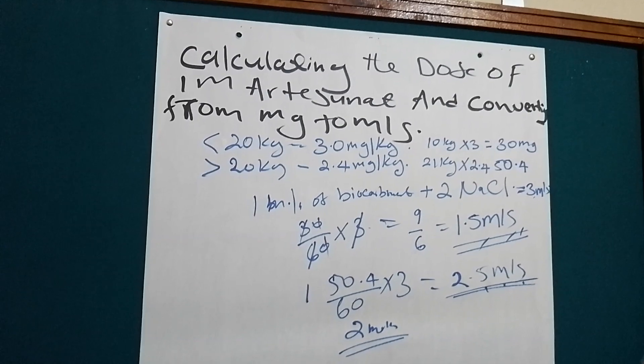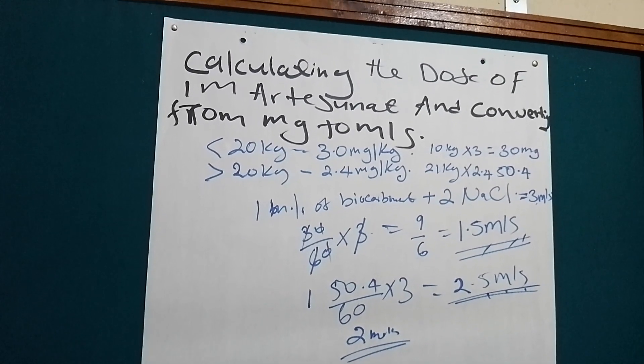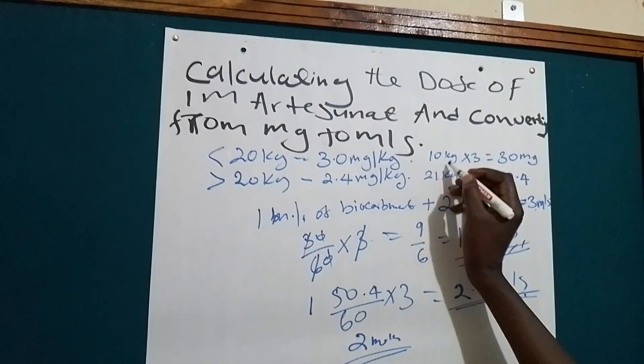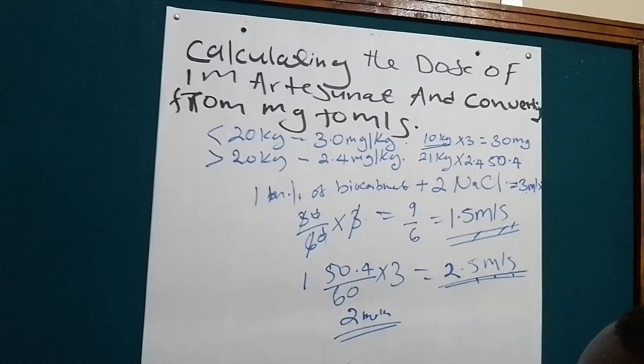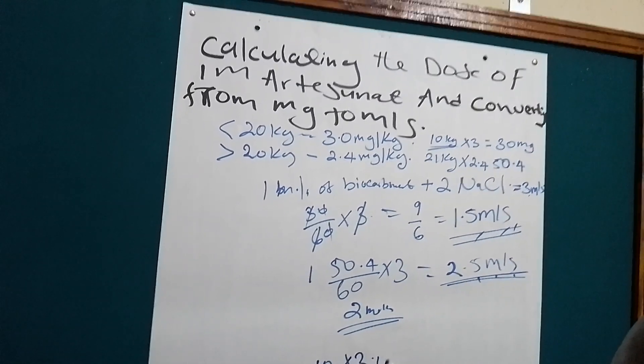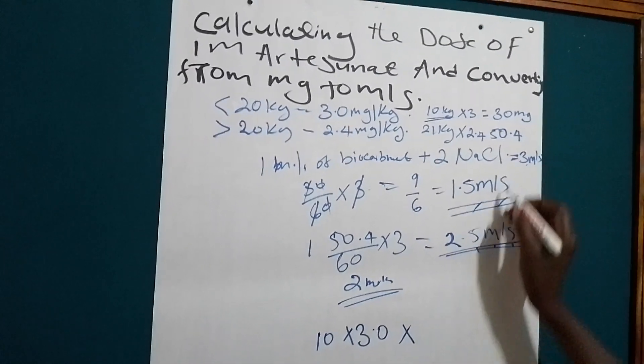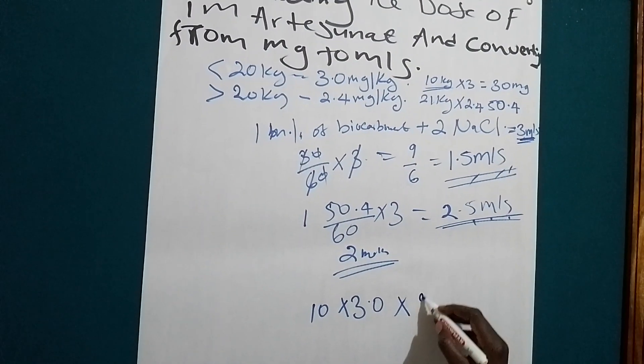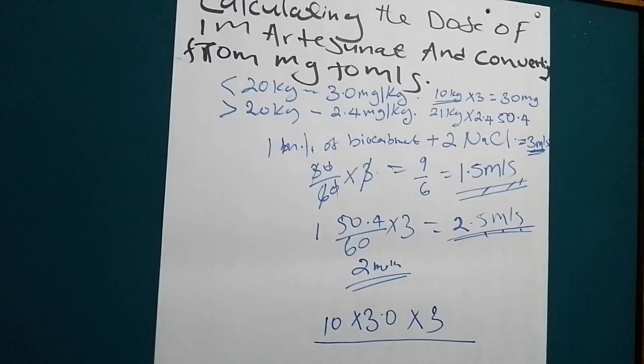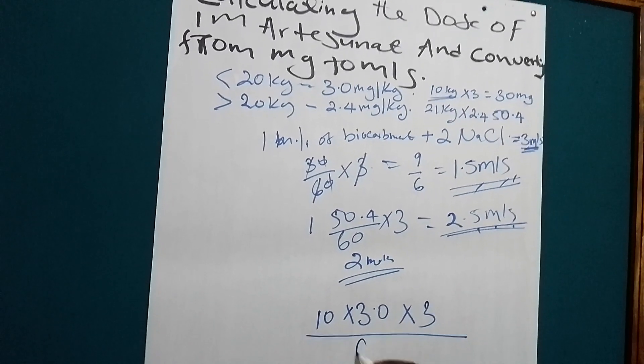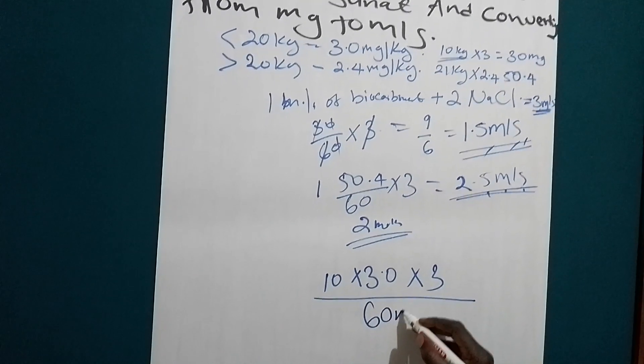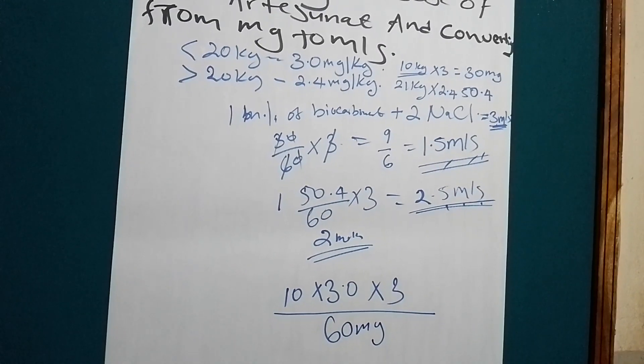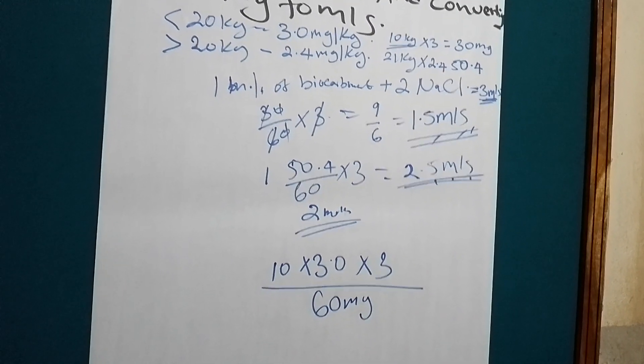So our kilogram body weight for this one is 10. We are going to multiply it by 3.0, then multiply by the diluent, which is 3. Then we divide it by the base, that is 60 milligrams. You will get it from the vial of artesunate.